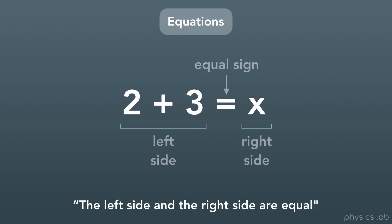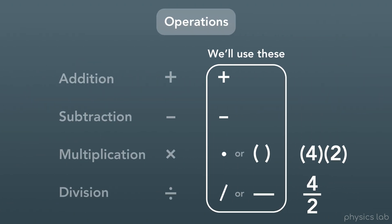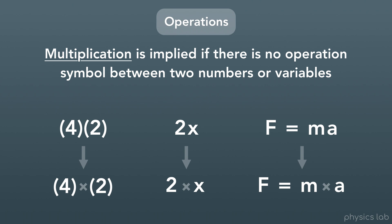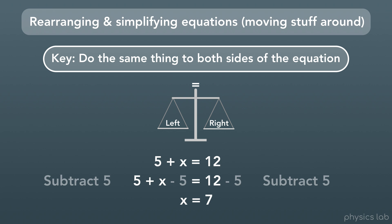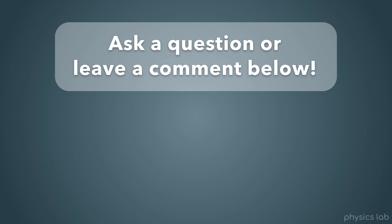Alright, let's do a quick recap. We learned about algebraic equations with numbers and variables, where every equation has a left side, a right side, and an equal sign — stating that both sides are equal. We covered the symbols for each operation and that multiplication is implied when there's no symbol between numbers or variables. We covered the order of operations and PEMDAS. And finally, the key to solving equations is keeping them balanced by doing the same thing to both sides. Thanks for watching, and I'll see you in the next video.